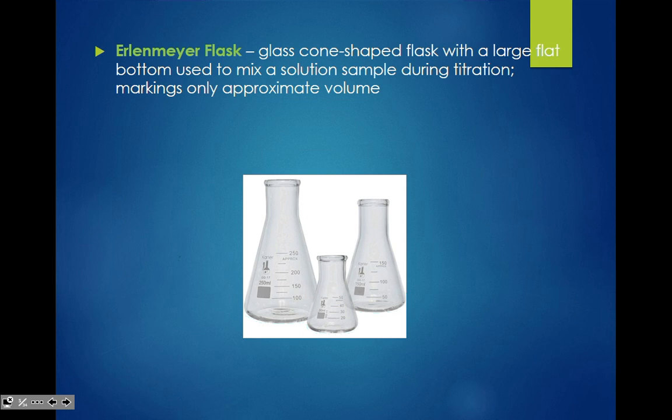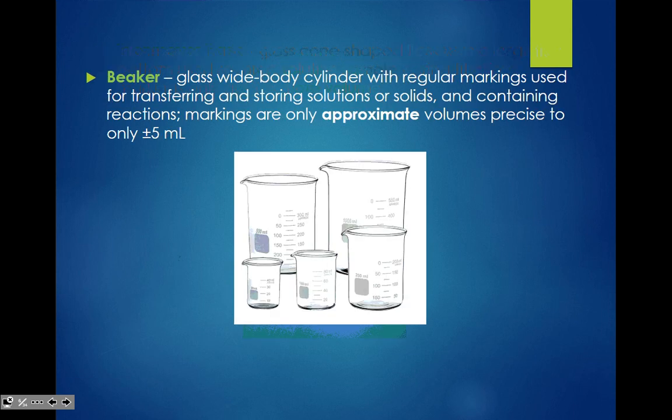Erlenmeyer flasks are typically used for titrations, which we'll talk about later at the end of the year. A beaker is a glass wide-body cylinder with regular markings used for transferring and storing solutions. That's all they're good for — we don't actually use them to measure, just to store and to transport.